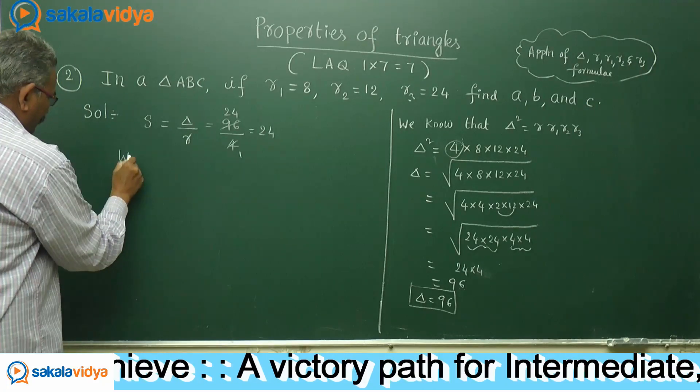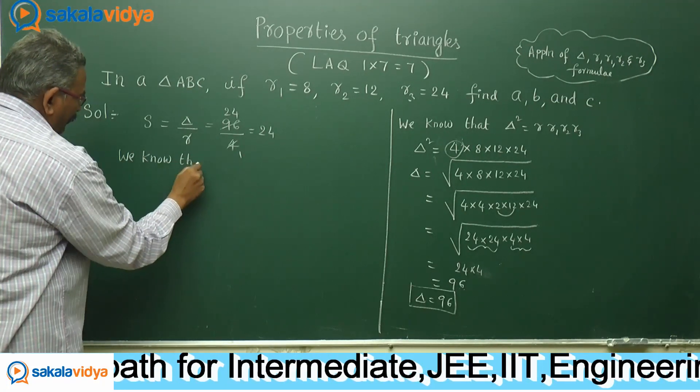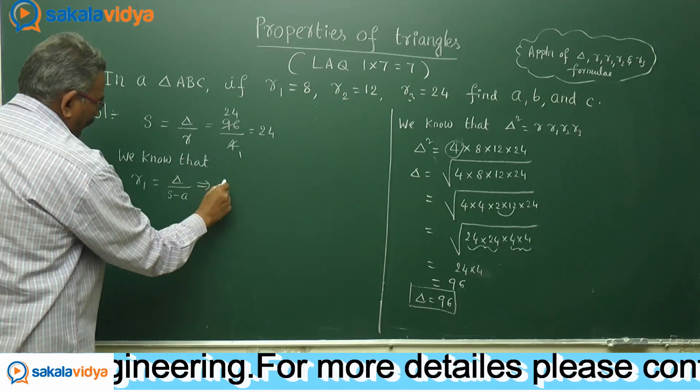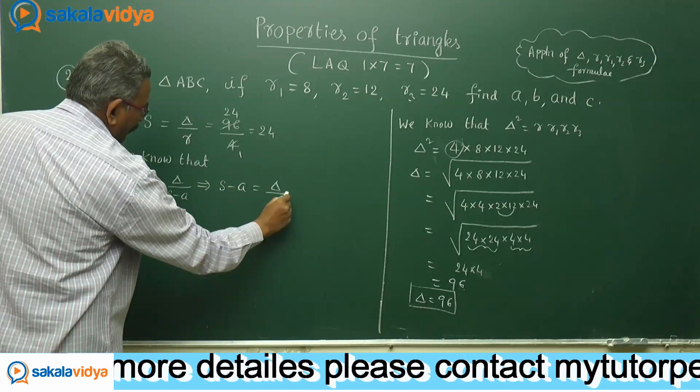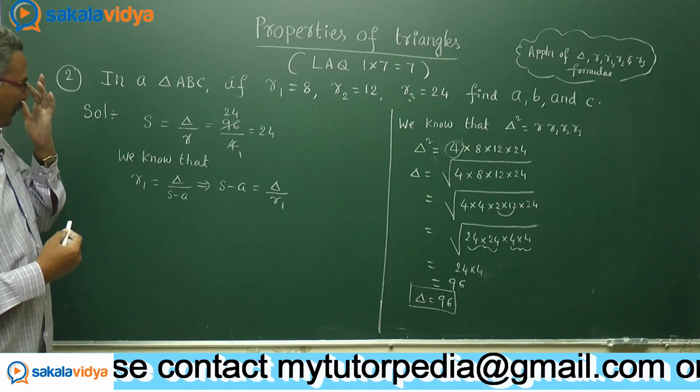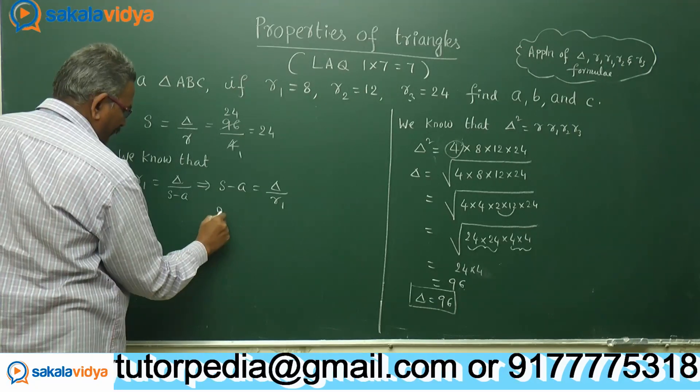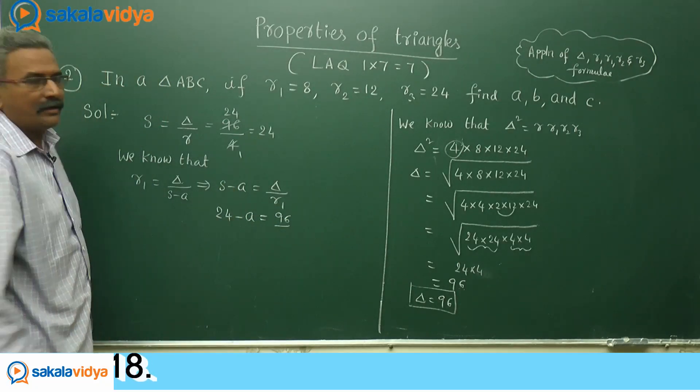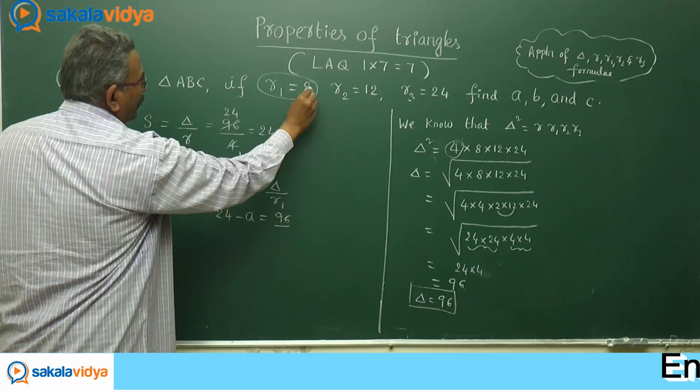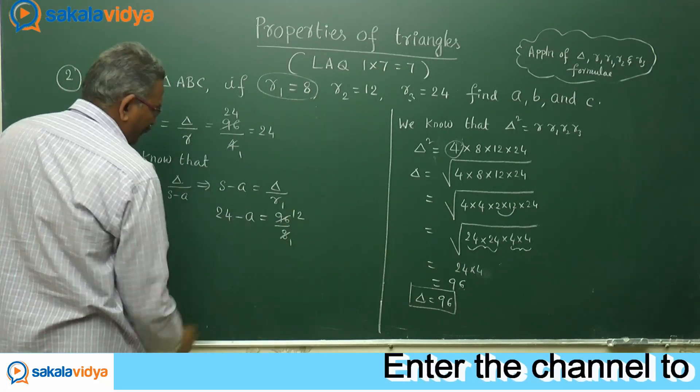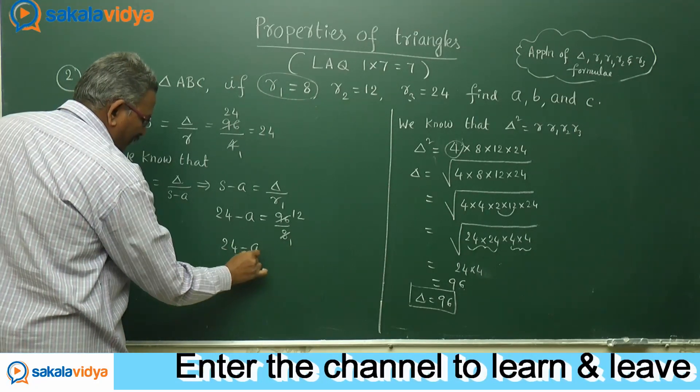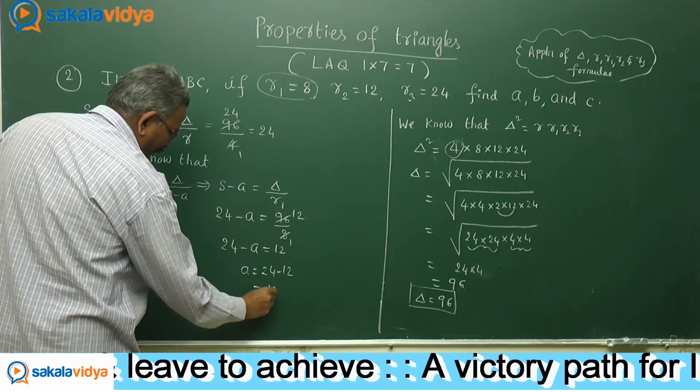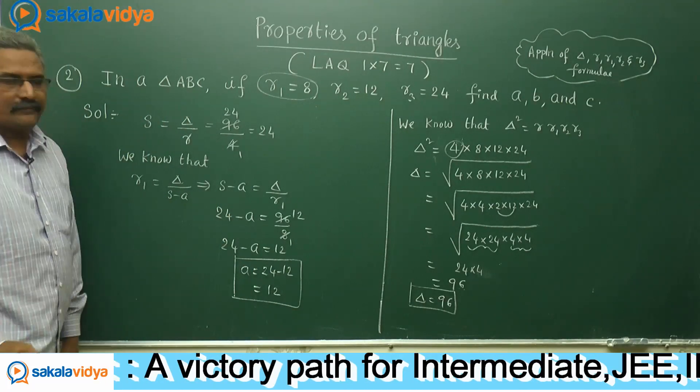We know that R1 equals delta by S minus a. So S minus a equals delta by R1. S is 24 minus a equals delta is 96 divided by R1 which is 8, equals 12. This is a linear equation in one variable. 24 minus a equals 12, so a equals 24 minus 12, that is 12. a value has been evaluated.